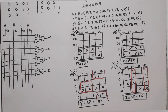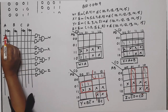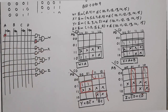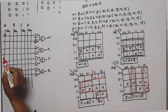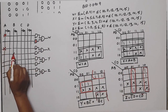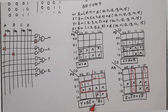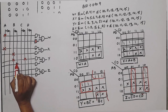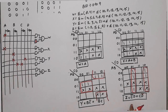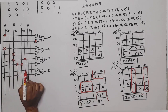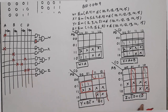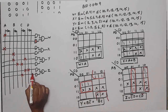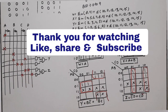For W, the product term is A — we place a cross mark here. For X: A plus B, cross marks at A and B. For Y: BC-bar — cross marks at B and C-bar; then B-bar C — cross marks at B-bar and C. For Z: C-bar D — cross marks at C-bar and D; then CD-bar — cross marks at C and D-bar. This completes the BCD to Gray code converter using PAL. Thank you so much. If you have any doubts, please write in the comment section.